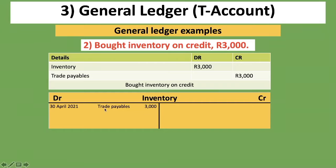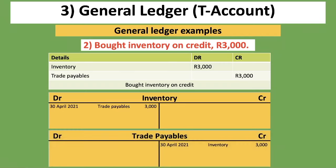I encourage you to pause and attempt each T-account before I reveal it. For trade payables: it's a liability on the credit side. Open the T-account, put the date on the credit side, the detail is inventory, and the amount is 3,000 rand.